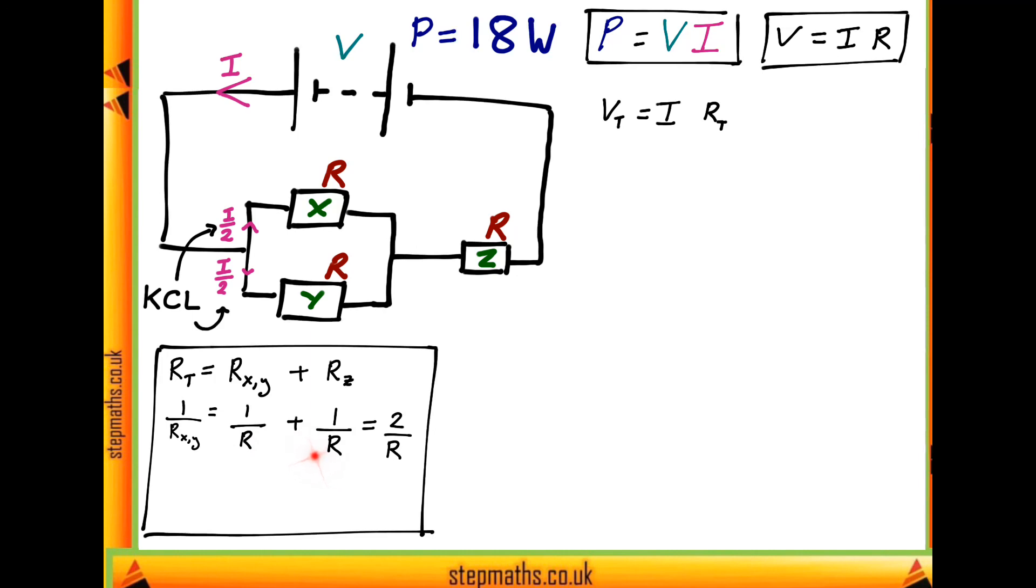giving us 2 over R, and therefore R_XY equals R over 2. Then, substituting this into our original equation, we find that R_XY plus R_Z is just 3R over 2.